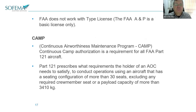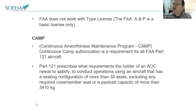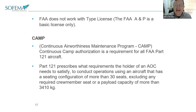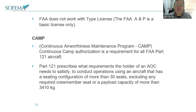The FAA does not work with type licensing. The FAA A&P is a basic license only. EASA, by contrast, focuses heavily on type endorsements — without completing a technical course and getting the license endorsed, the company cannot grant you certification approval. That doesn't work the same way under the FAA system — quite different.